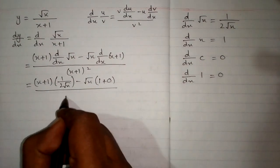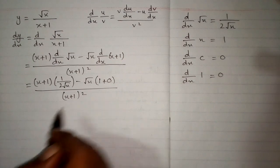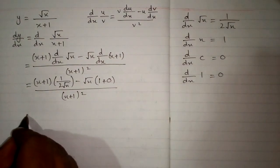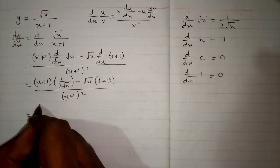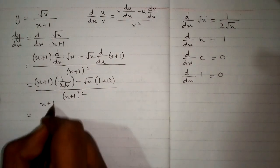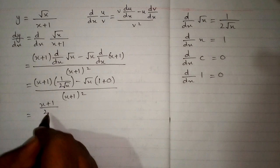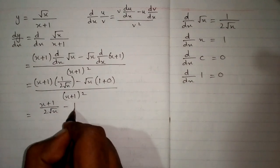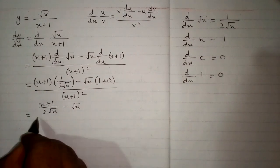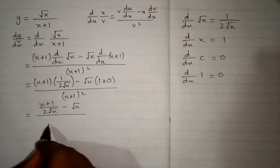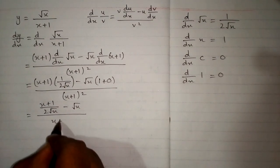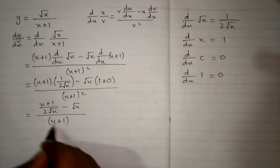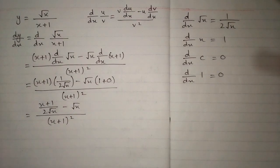Now this can be written as x plus 1 upon 2 square root of x minus square root of x, all upon x plus 1 whole square.